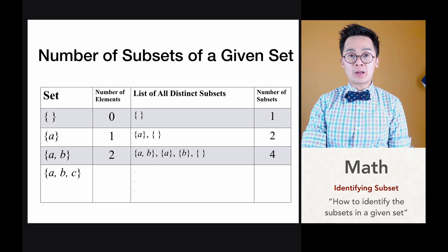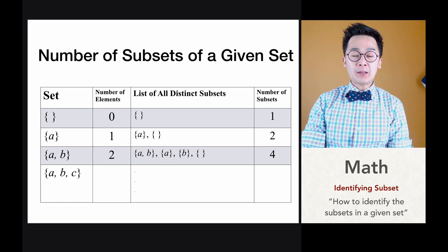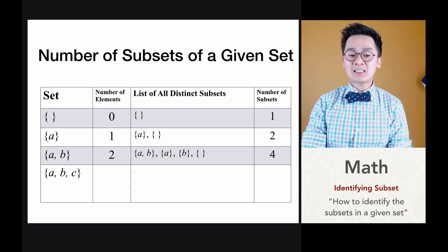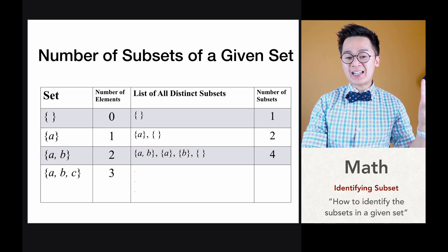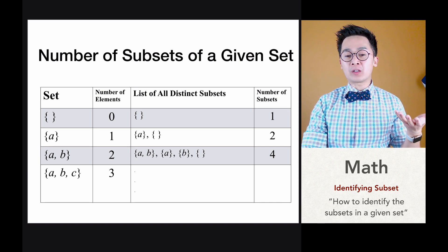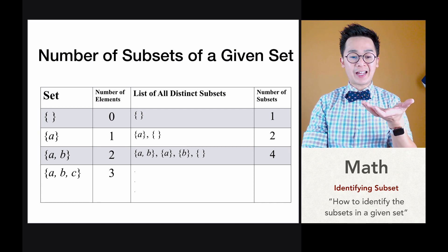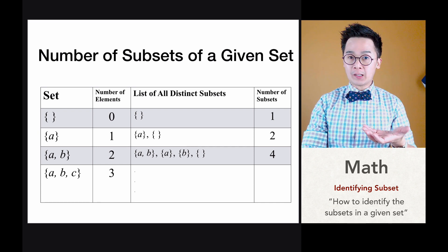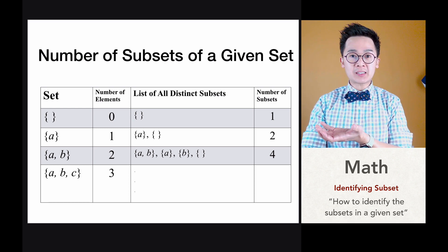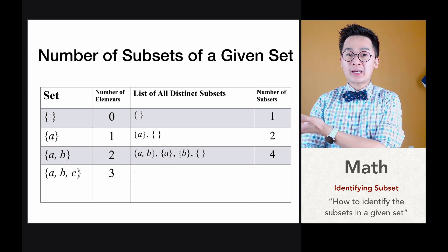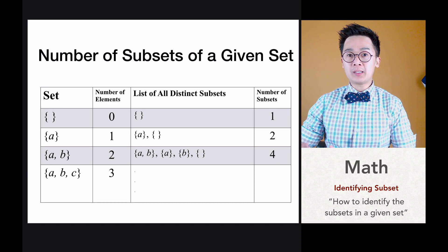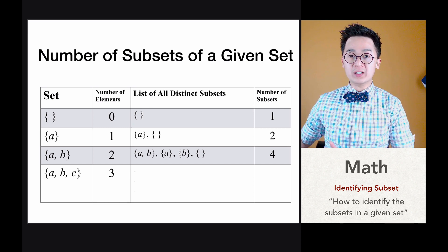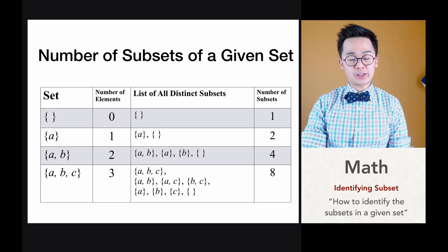For example number four, the last row, we have {A, B, C} as elements, so we have three different elements in this set. However, the number of all distinct subsets would be the set itself {A, B, C}, and we can also have subsets {A, B}, {B, C}, and {A, C}. We can also have individual subsets {A}, {B}, {C}, and of course the null set, for a total of eight different subsets.